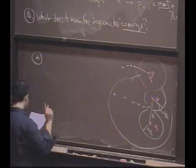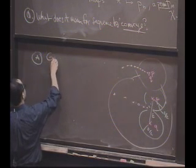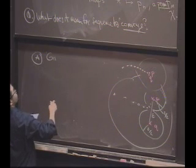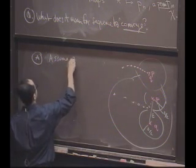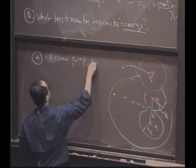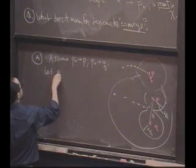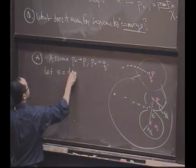But notice there's a key technique here. So given epsilon, so we're not given, we're going to apply that definition, because we're assuming they converge, right? So assume PN converges to P, and PN converges to Q.